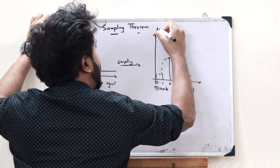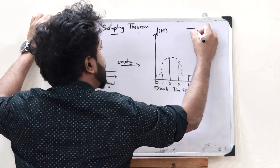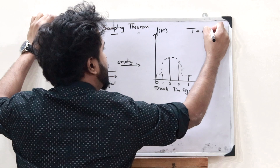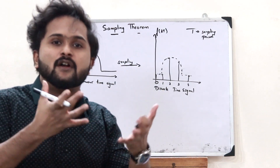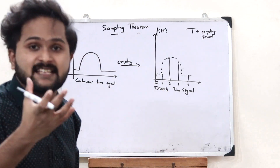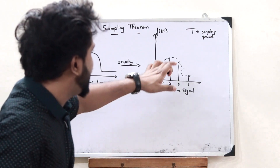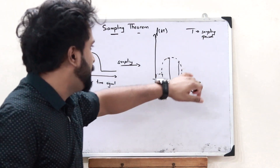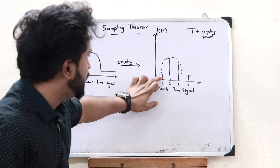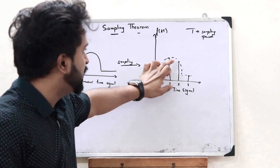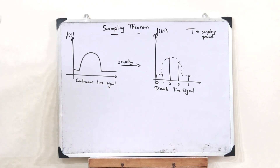This is why we mainly use sampling — for the purpose of converting a continuous time signal into a discrete time signal. This is f of kT, where T is the sampling period. We can say that we are doing periodic sampling because we are obtaining samples at T periods of time. At T sample periods, we are obtaining each and every sample. This is what we refer to as sampling.